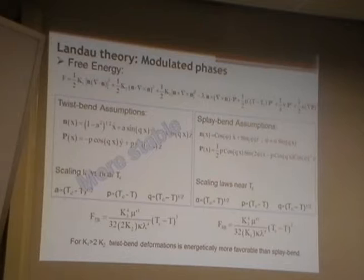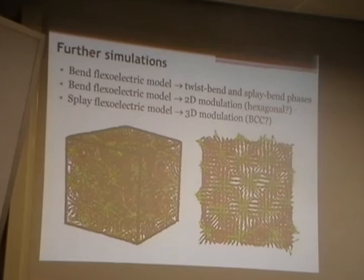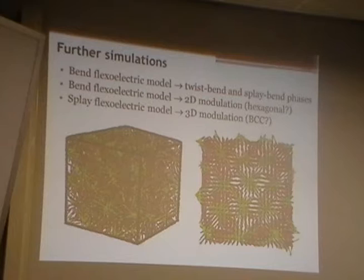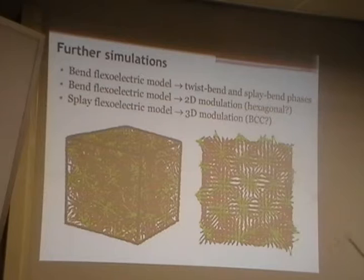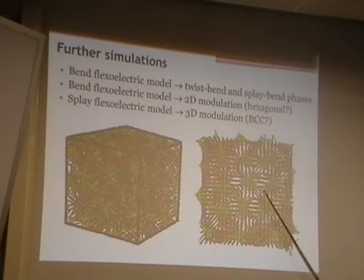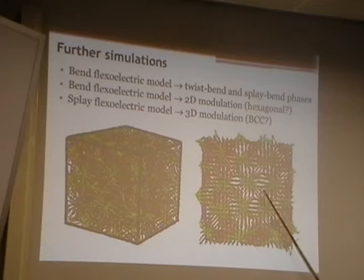My students kept doing more simulations after finding what they were supposed to find, and then they found more complicated structures with three-dimensional modulations — not just the simple one-dimensional modulation of the twist-bend or splay-bend phases. Instead, you can get things with a two-dimensional modulation that looks like a lattice of hedgehogs in the two-dimensional plane, or a three-dimensional thing that looks like a lattice of hedgehogs in 3D.